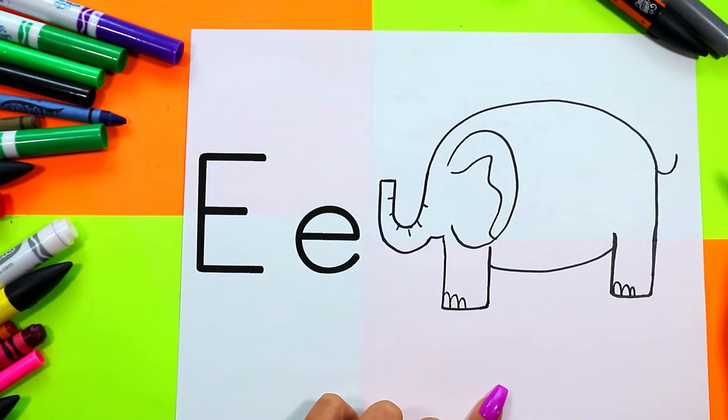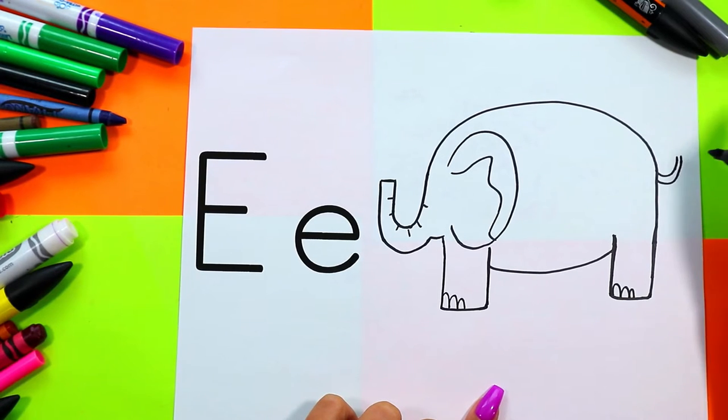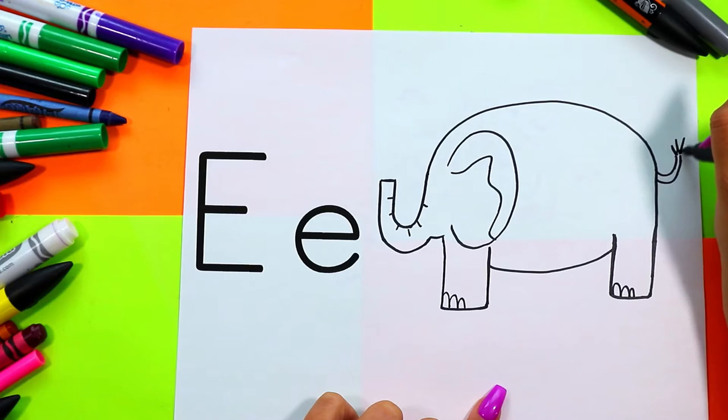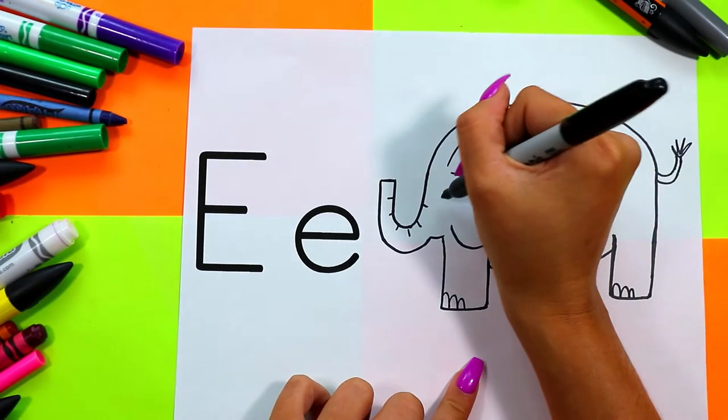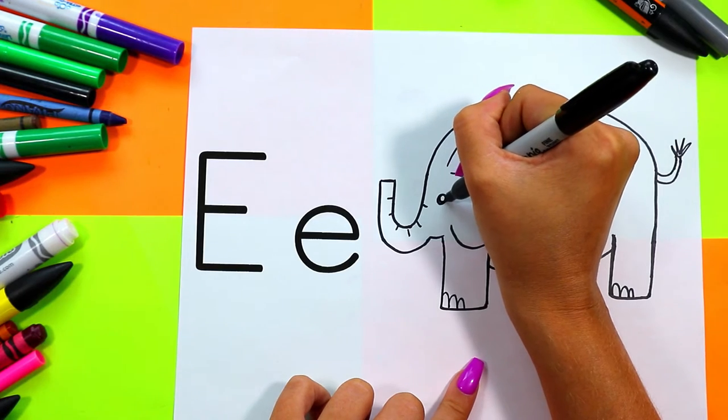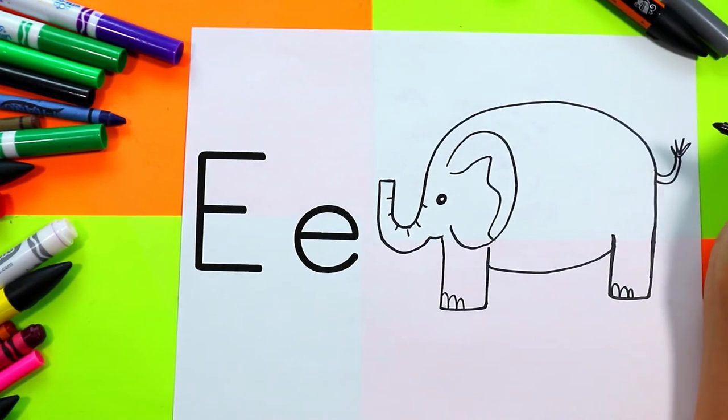Draw one curved line and a second curved line for elephant's tail, and draw zigzag lines for the hair on the tip of the tail. Draw a circle and color it in, leaving just a bit of white for elephant's eye.